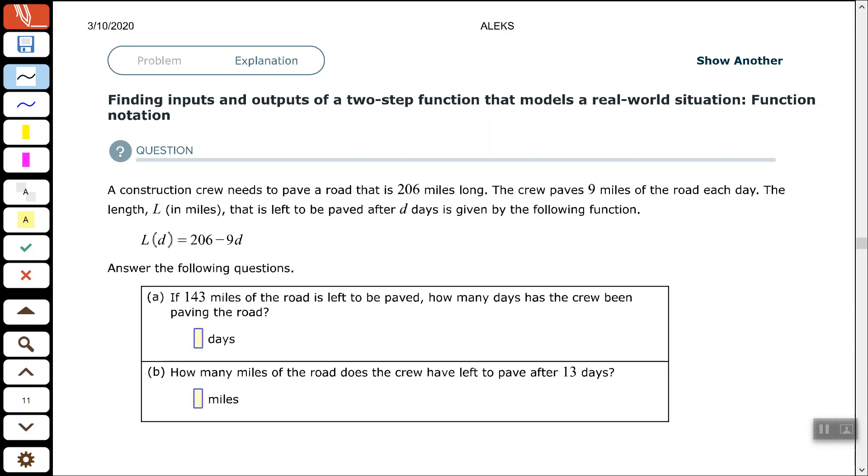So what we are given here is L(D). We're given the output. So instead of L(D) equals 206 minus 9D, we would say 143 equals 206 minus 9D, replacing the L with 143. And that will tell us how many days the crew has been paving. So we solve this equation for D to figure that out.